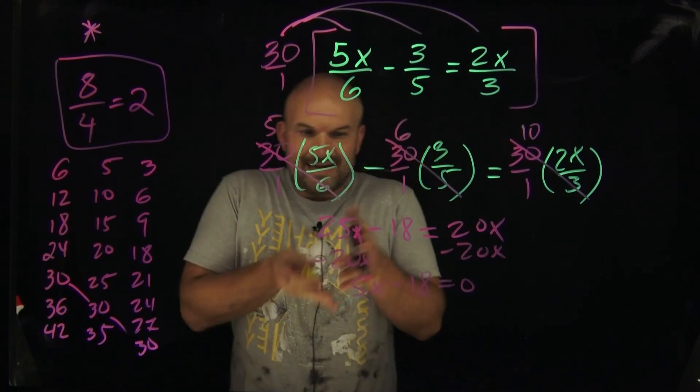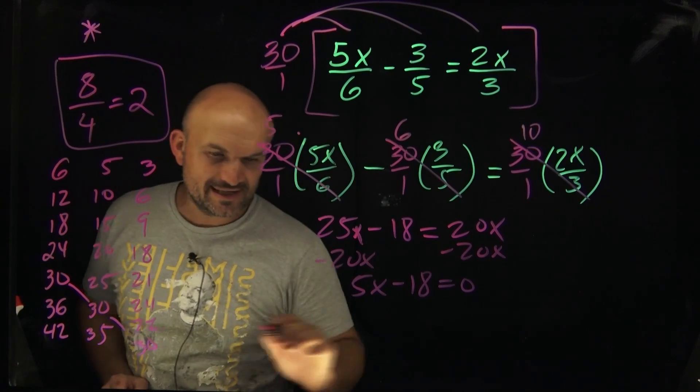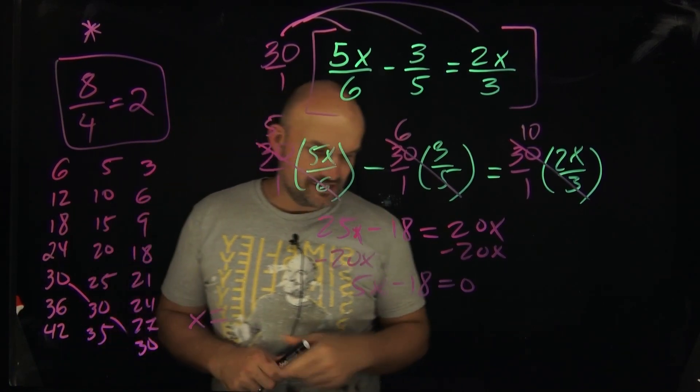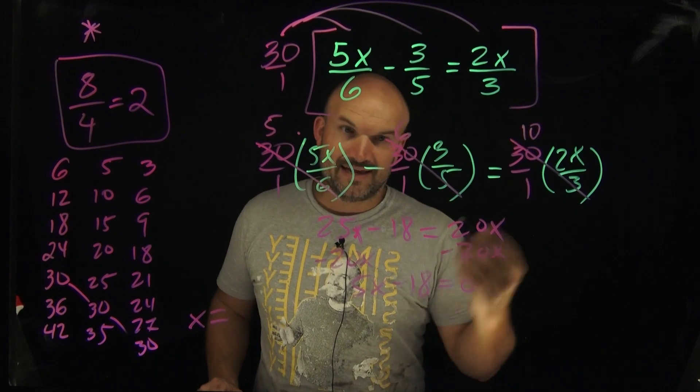But again, if I need to solve for x, I got to solve for x, right? My goal here is to get x equals. So to do that, I need to add the 18 to the other side and then divide by five.